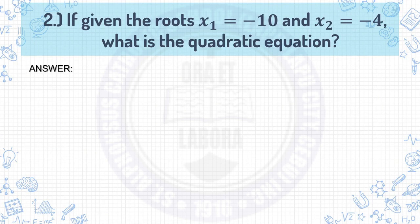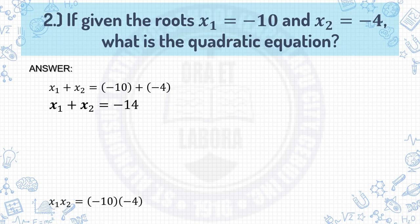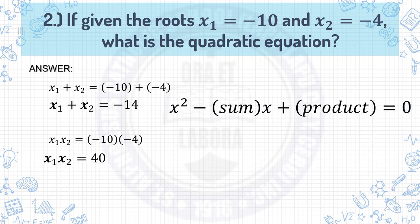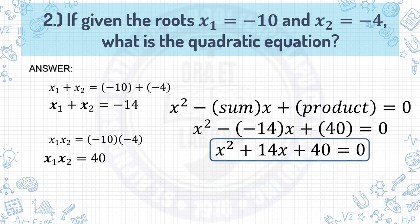Example number 2: Given roots x₁ equals negative 10 and x₂ equals negative 4, what is the quadratic equation? First, determine the sum and the product of the roots. For the sum: x₁ plus x₂ equals negative 10 plus negative 4, which is negative 14. For the product: x₁ times x₂ equals negative 10 times negative 4, which is 40. Then write x² minus (sum)x plus (product) equals 0. Substituting negative 14 for the sum and 40 for the product: x² plus 14x plus 40 equals 0.